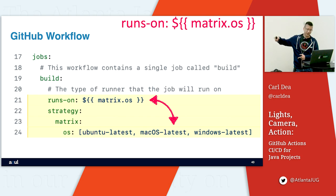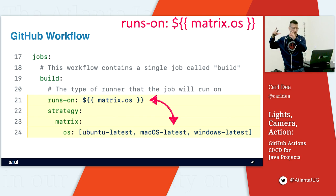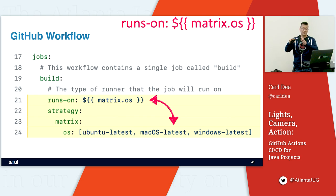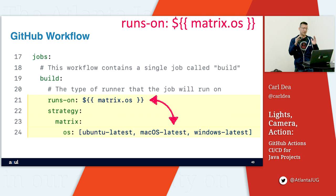So one job called 'build' will create three runners and run that job three times, because there are three instances on different operating systems. This is one job that runs on three different operating systems. It's using the idea of a lookup table. You can nest it — here I call it matrix.os, and later I'll say matrix.jdkVersion.